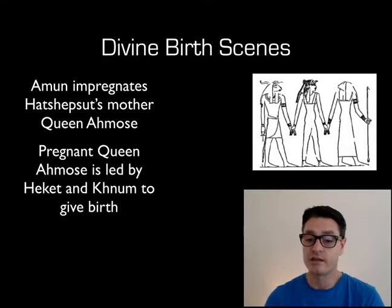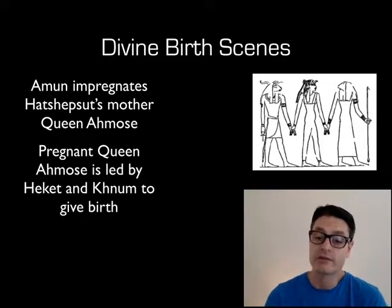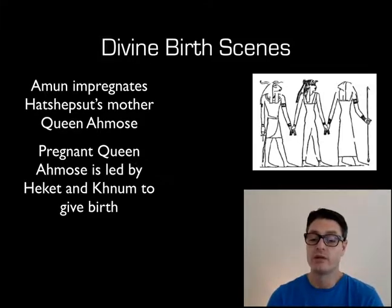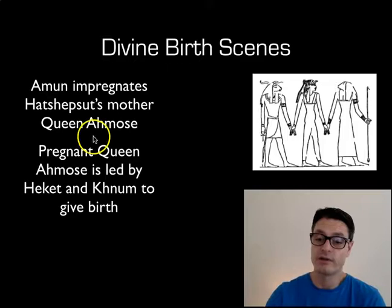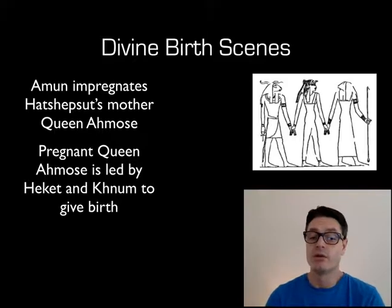In the next scene, we can see a couple of other gods leading a pregnant Queen Ahmose to the birthing room. She's led by Heket and Khnum to give birth. We can see a slight bump — it is very hard to see — indicating that Queen Ahmose is pregnant.